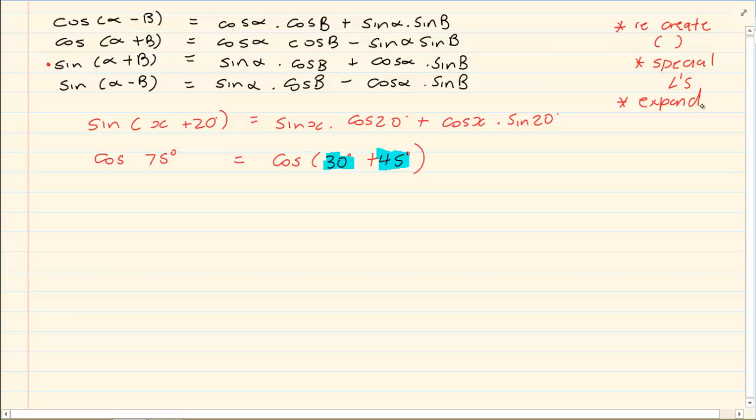Now the most common values that they tend to use in this case is 75, and the other favourite is 15 degrees. Why 15? Because 15 can be written as 45-30. It can also be written as 60-45. Both are special angles.